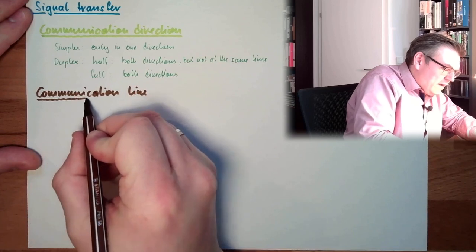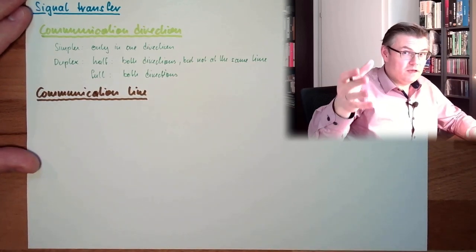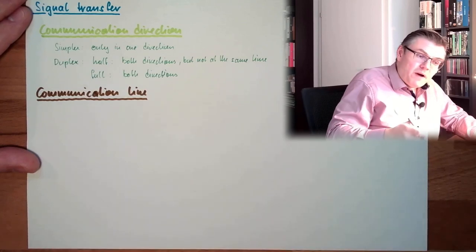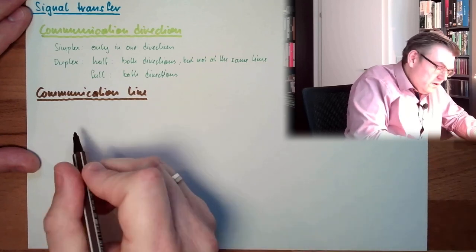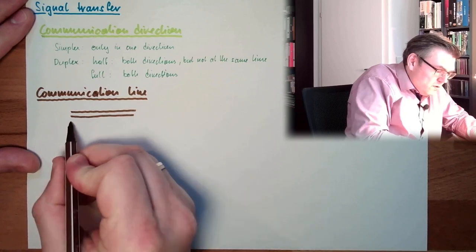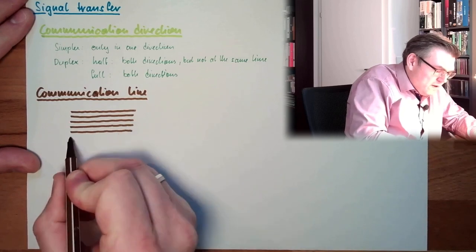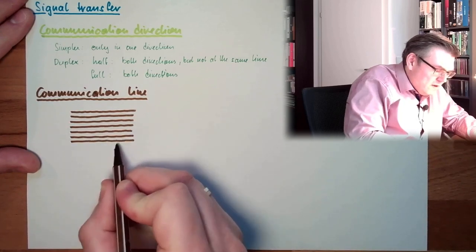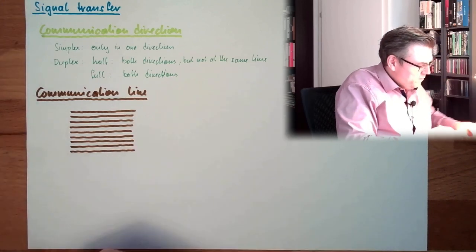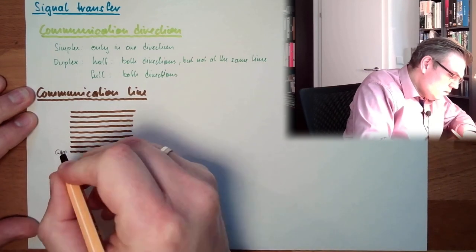The communication line can either consist, if you think about transferring one byte, you might transfer this byte as a whole. So you need one data line, two, three, four, five, six, seven, eight data lines. And then you need a ground line. So you have the data lines and you have a ground.